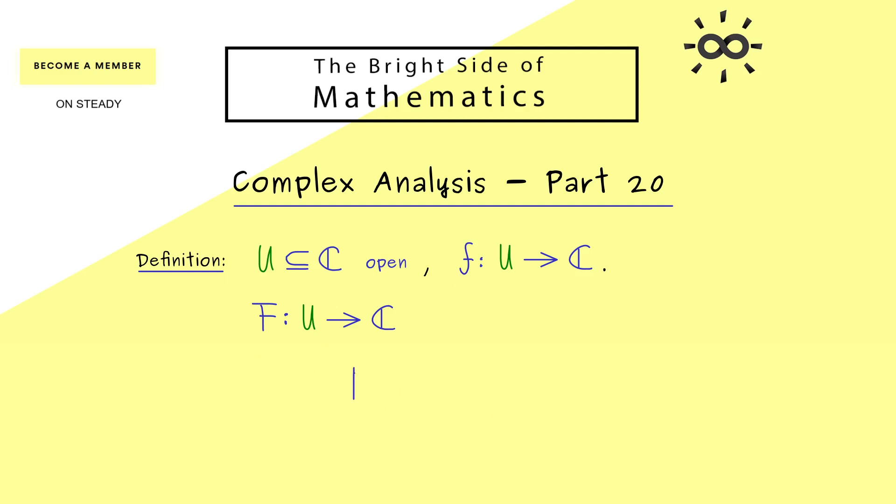We have this because what we want is that capital F prime, the complex derivative, is exactly the function f again. And then in this case we call capital F a primitive or an anti-derivative of f.